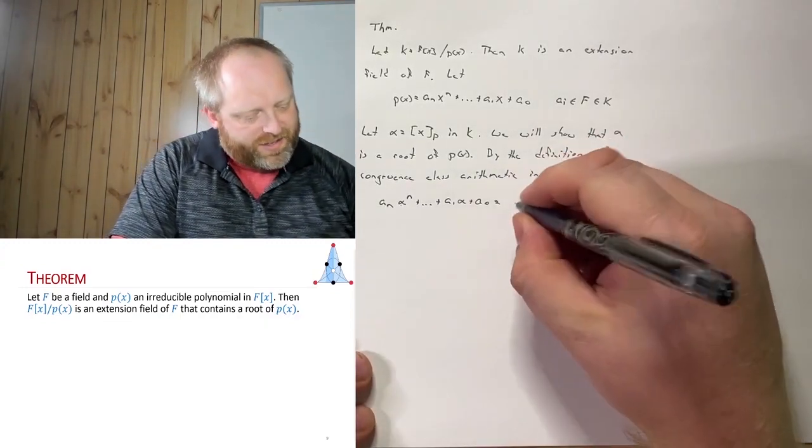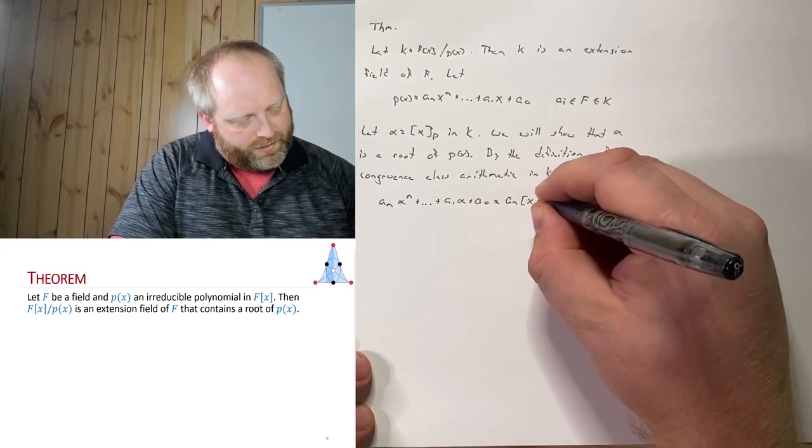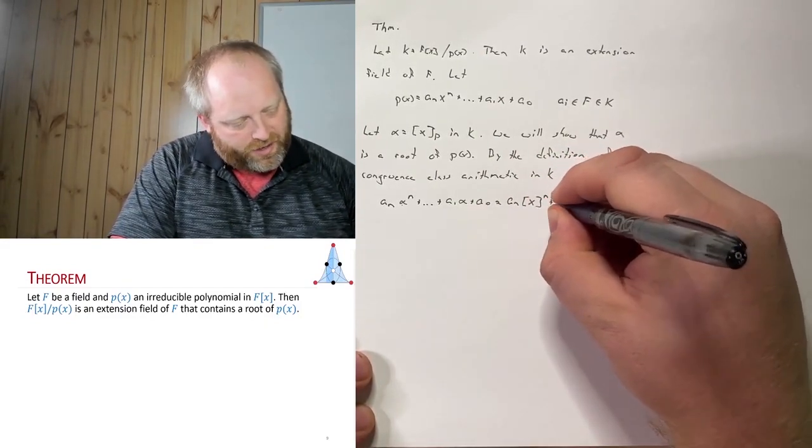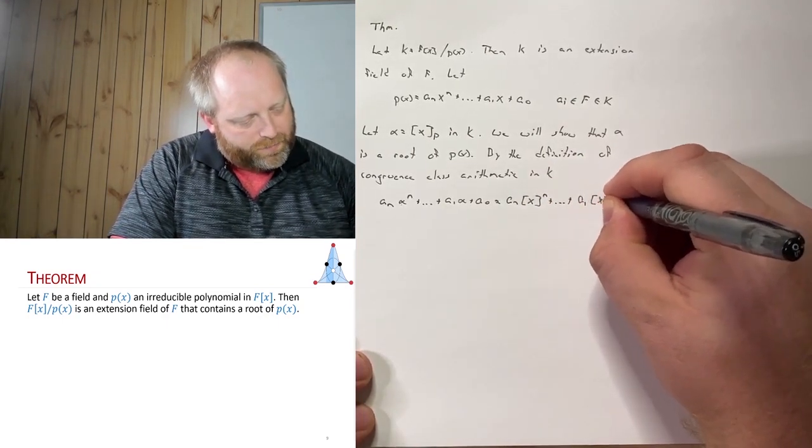So I'm just substituting that in. So this is a_n x^n plus all the way down a_1 x plus a_0.